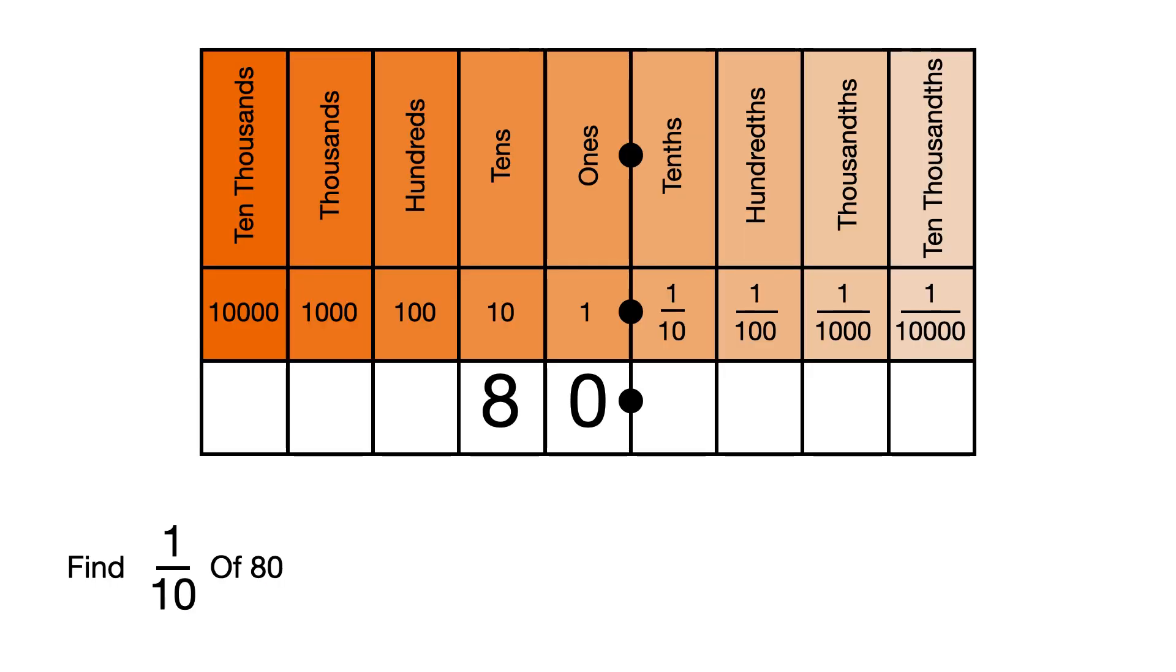Find 1 tenth of 80, and we're going to use the place value grid this time. This is the same as saying 80 divided by 10.